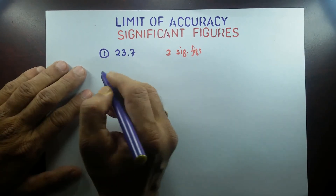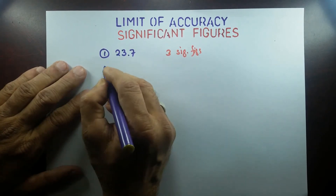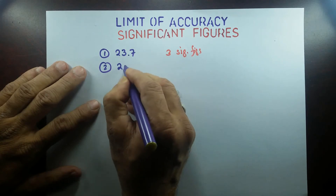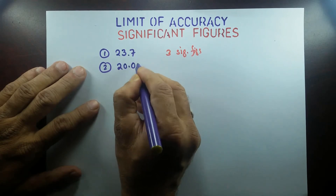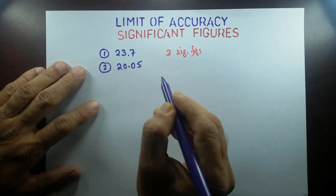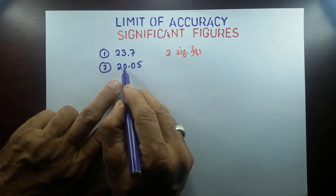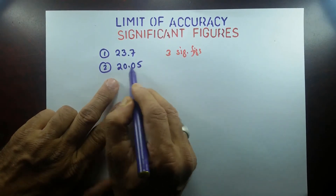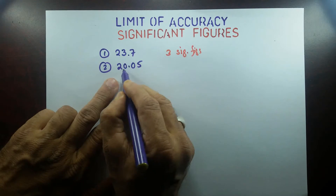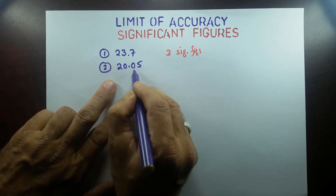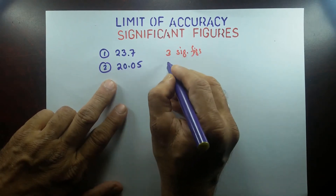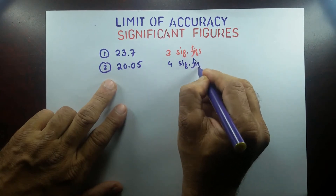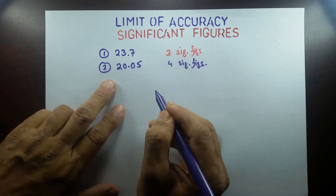If I have a number like 20.05 — where I have zeros in between non-zero digits — those zeros are significant. So this particular number has four significant figures, or four sig figs.